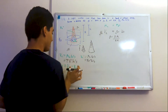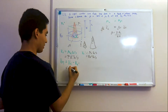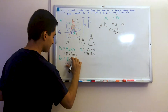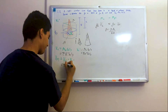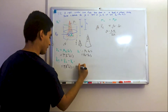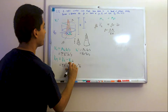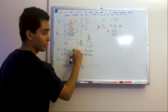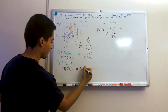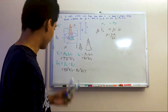Now I can plug in both expressions. The volume of the fluid is pi*R²*H/3 minus pi*r²*h/3. So now, if we know the density of the cone, we can simply plug these in.